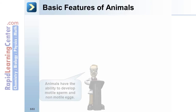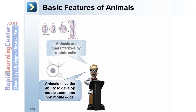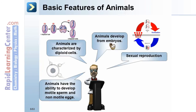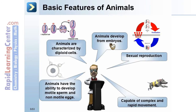Basic features of animals. Animals have the ability to develop motile sperm and non-motile eggs. Animals are characterized by diploid cells and develop from embryos. They undergo sexual reproduction and are capable of complex and rapid movement.